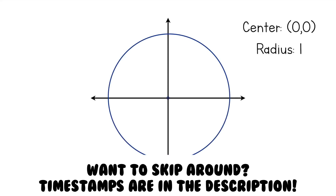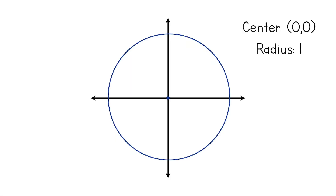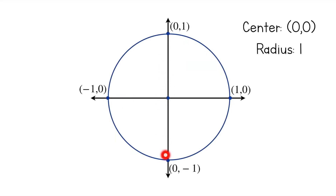This is the center, and this point is (1, 0), because this right here is a radius. And this point here is (0, 1), and this point here is (-1, 0), and this point here is (0, -1), because these are all radii as well.